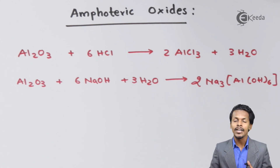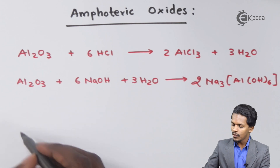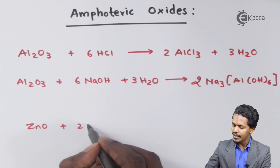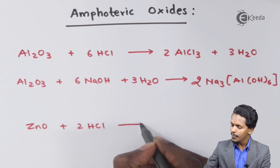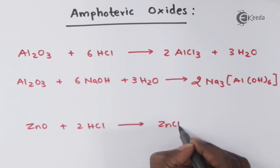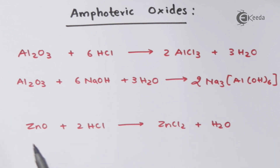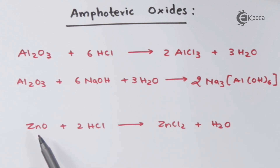Another example of an amphoteric oxide is zinc oxide (ZnO). When ZnO is treated with two moles of HCl, the product formed is ZnCl2 along with H2O — a salt and water — which is a neutralization reaction. Since HCl is an acid, ZnO must be acting as a base here, making it a basic oxide in this case.